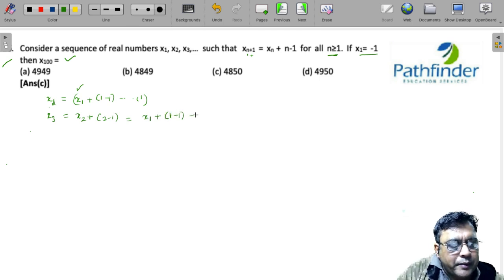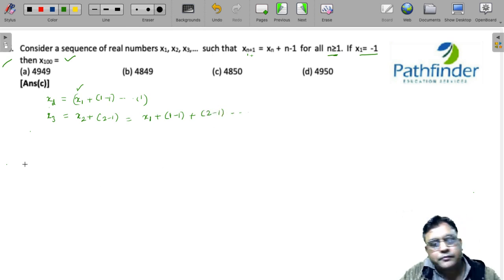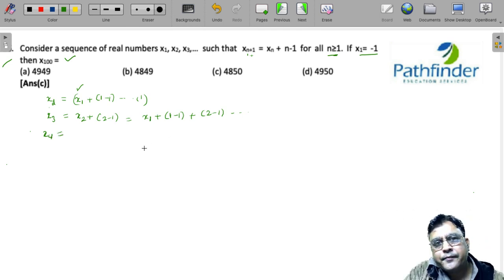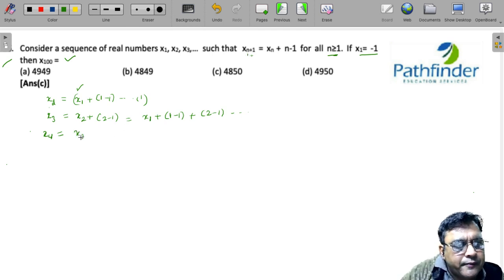Then x4. For x4 we need to plug in the value of n as 3, so x4 = x3 + 3 - 1.